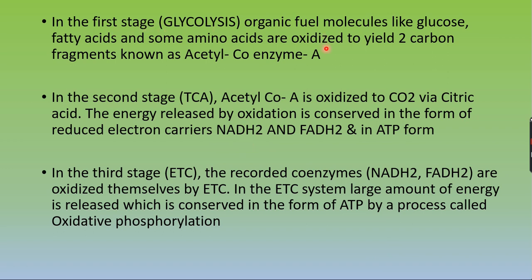In the first stage, pyruvate is synthesized. That pyruvate is converted into acetyl coenzyme A, which is the interlink between the first stage and the second stage — the TCA cycle. Once acetyl-CoA enters and combines with oxaloacetic acid, the TCA cycle is completed. During the second stage, NADH and FADH2 are synthesized. These electron carriers enter the third stage — the electron transport chain — where they are oxidized, and ATP is synthesized by oxidative phosphorylation.